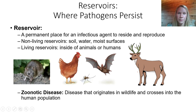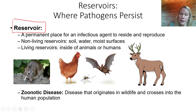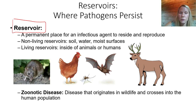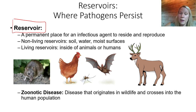The term reservoir refers to a permanent place for the infectious agent to reside and reproduce. Usually associated with biological vectors, there is a reservoir where the pathogen is reproducing and spending most of its time. The reservoir can be non-living — like soil, water, or a moist environmental surface — or living, such as inside an animal or human. Common living reservoirs include mice, rats, chickens, and mosquitoes.